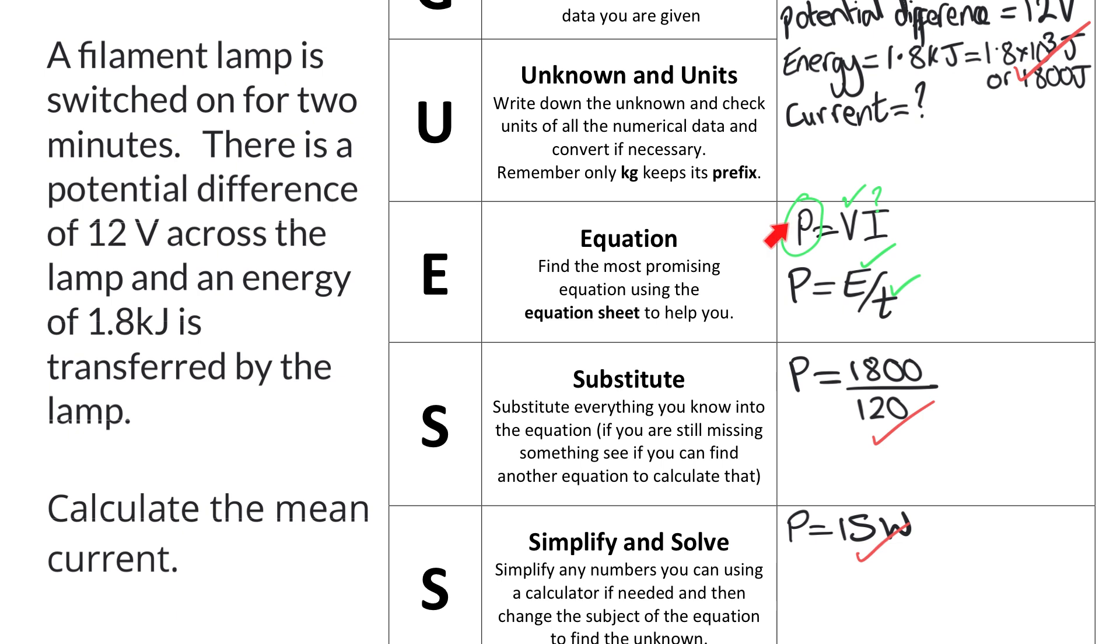Now that I know the power I can go back to that power equals potential difference times current and I can substitute into that. So instead of power I'm going to replace that with the 15 watts that I've just calculated. Instead of the potential difference I'm going to replace that with 12, and the current I leave as a symbol because that's what I'm trying to find. Good news, that's got me another method mark.